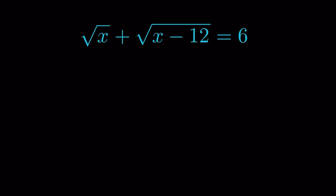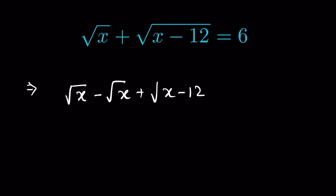Square root of x plus square root of x minus 12 equals 6. Find the value of x. If we subtract square root of x from both sides, we have square root of x minus square root of x plus square root of x minus 12 equals 6 minus square root of x.